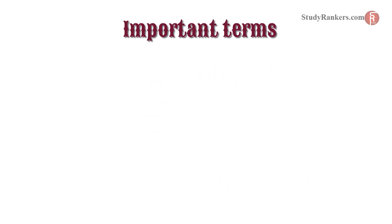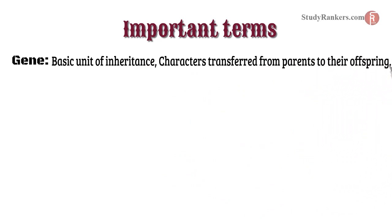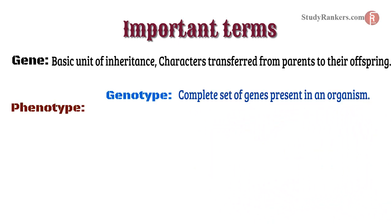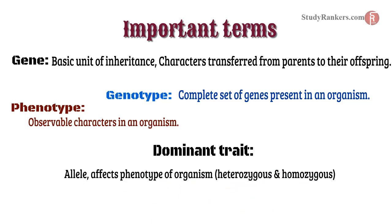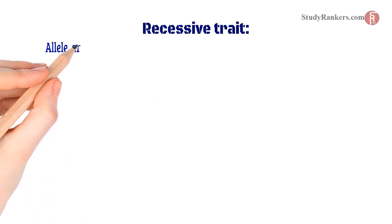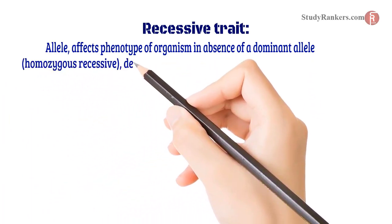Before starting Mendel's work, we should be familiar with some important terms. Gene: the basic unit of inheritance; characters transferred from parents to their offspring. Genotype: the complete set of genes present in an organism. Phenotype: the observable character in an organism. Dominant trait: an allele that affects the phenotype of an organism in both heterozygous and homozygous conditions, denoted by a capital letter.